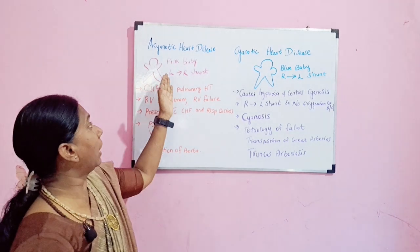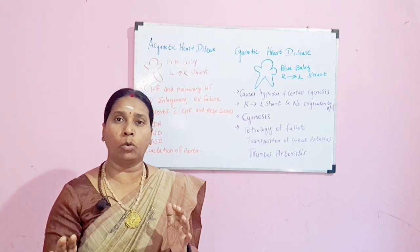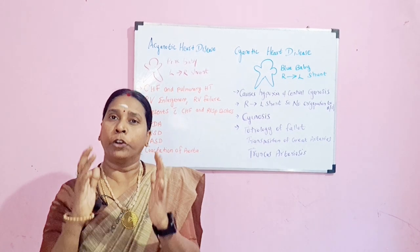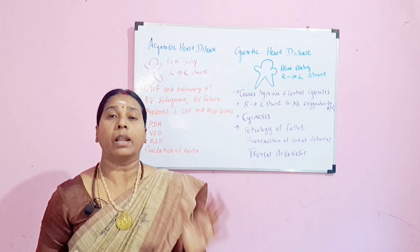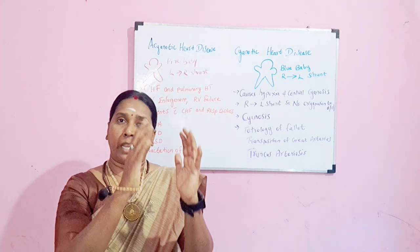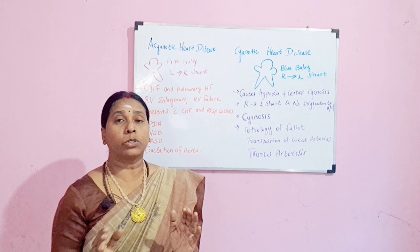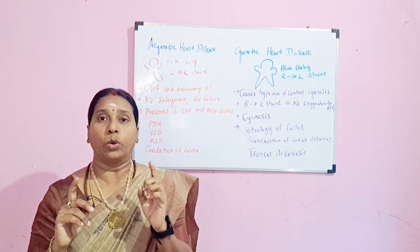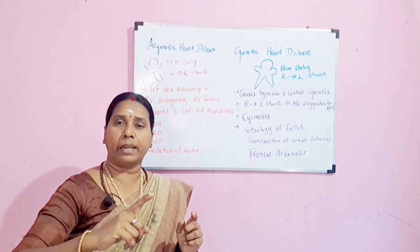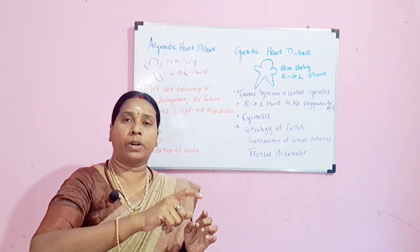In acyanotic heart disease, what happens is a shunt — an abnormal opening from the left side to the right side of the heart. The left side carries oxygenated blood coming from the lungs, while the right side carries deoxygenated blood going to circulation. Because of this abnormal opening, the oxygenated blood from the left side gets mixed with the deoxygenated blood on the right side.